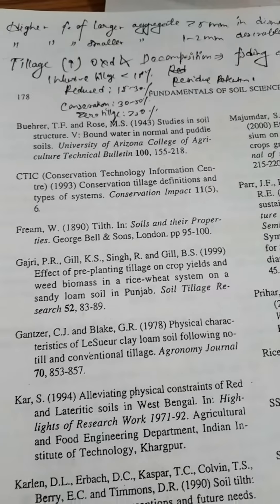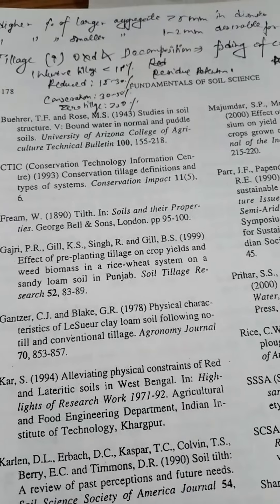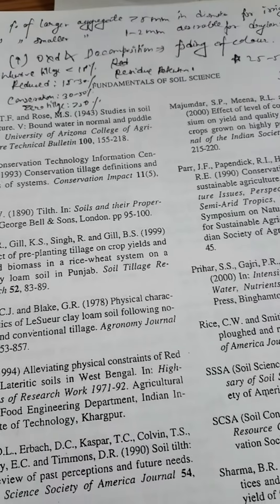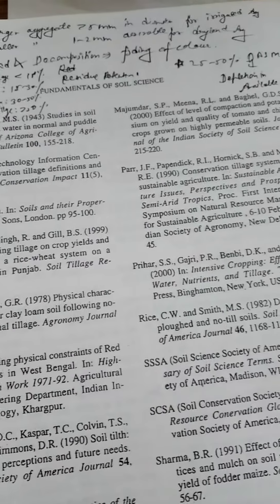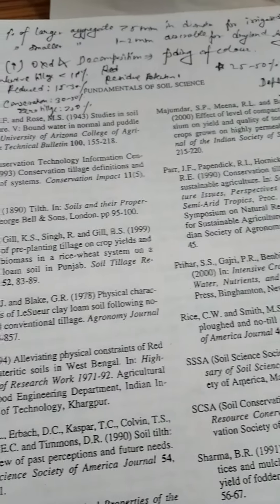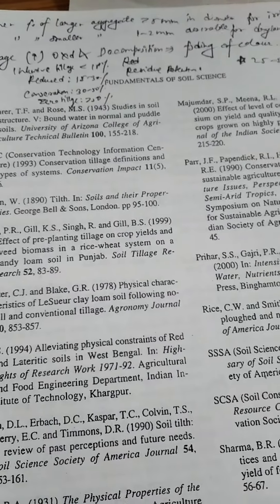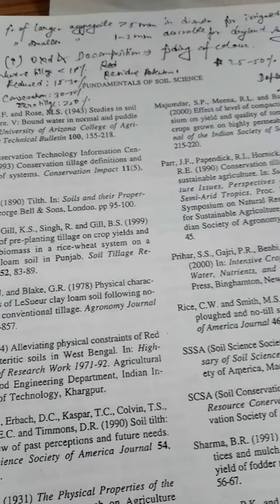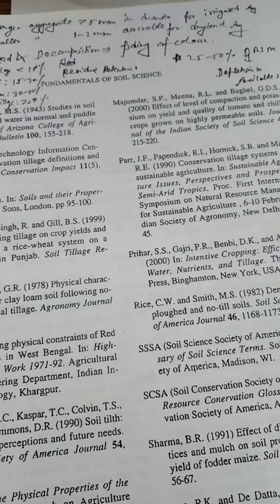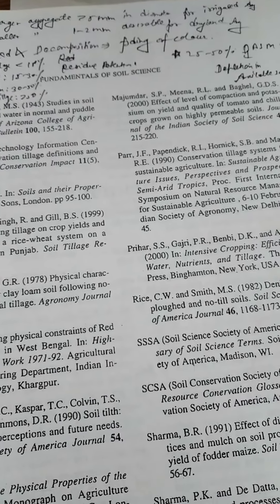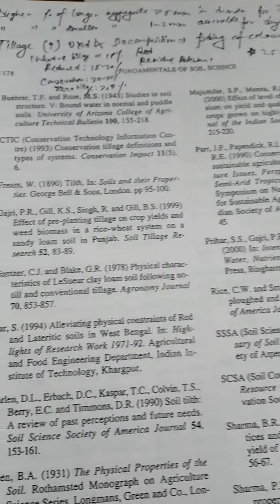One more figure: a higher percentage of larger aggregates greater than 5 mm are required for irrigated agriculture, while a higher percentage of smaller aggregates of 1–2 mm are desirable for dryland agriculture.